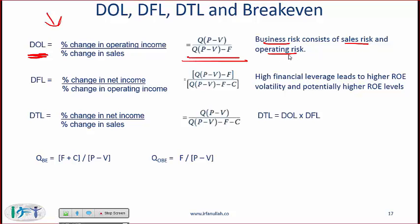Sales risk means the risk of selling less than you expected, either less quantity or at a lower price. Operating risk is the risk of your operating expenses being higher than expected. A company with a high degree of operating leverage will be a company with relatively high fixed costs.